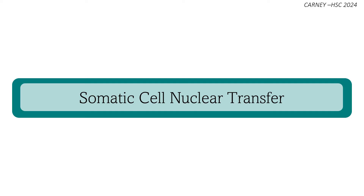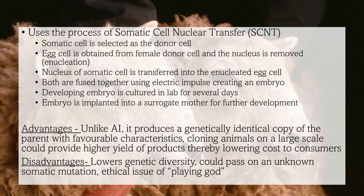Somatic cell nuclear transfer is a type of genetic technique used in whole organism cloning. The process is as follows: a somatic cell is selected as the donor cell. The egg cell is obtained from a female donor and the nucleus is removed through a process of enucleation. The nucleus of the somatic cell is then transferred into the enucleated egg cell, and both are fused together using an electric impulse to create an embryo.